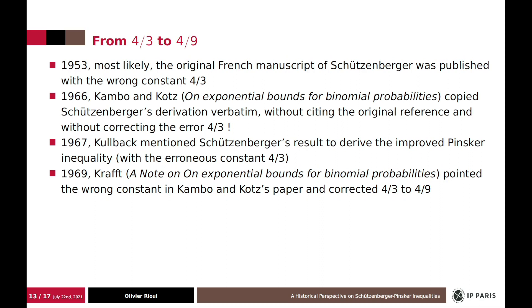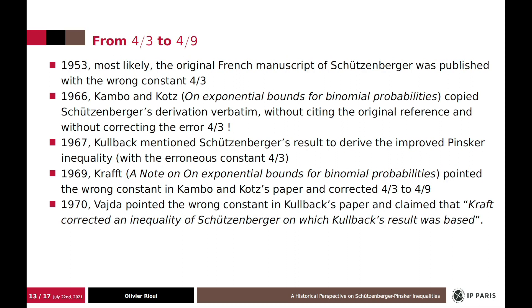And finally, Kullback also mentioned Schützenberger verbatim, but with the wrong constant. And finally, Kraft discovered that the constant was wrong and corrected to four over nine. And so Vajda was the one who pointed that the constant was wrong in Kullback's paper. And so he said that Kraft corrected inequality of Schützenberger, on which Kullback's result was based.